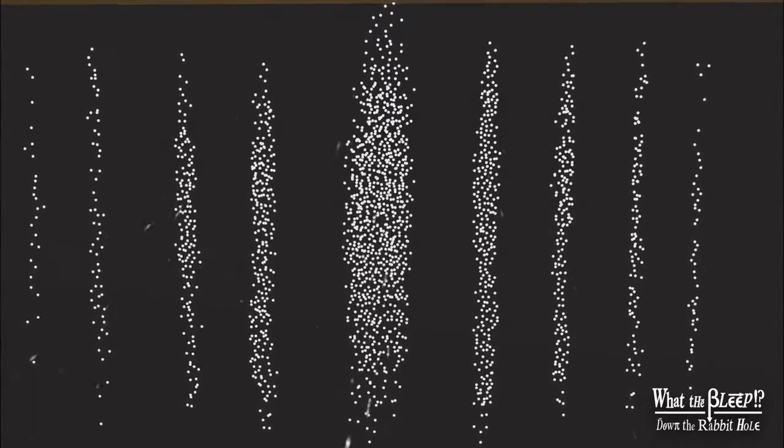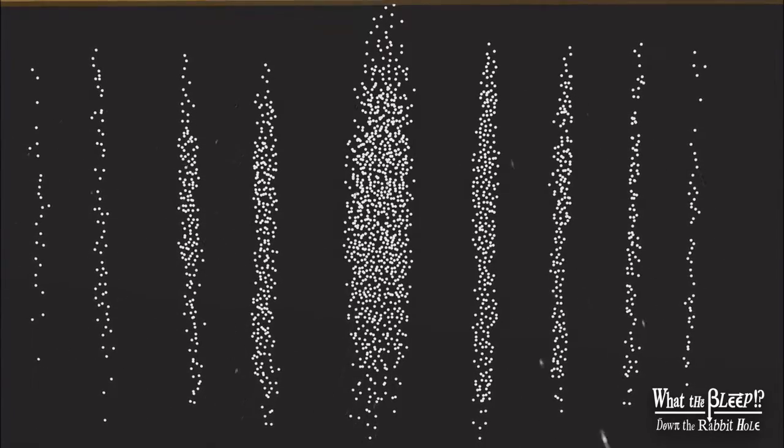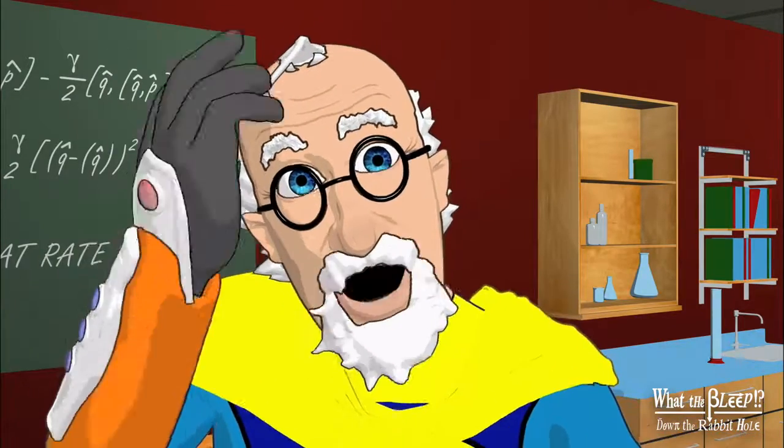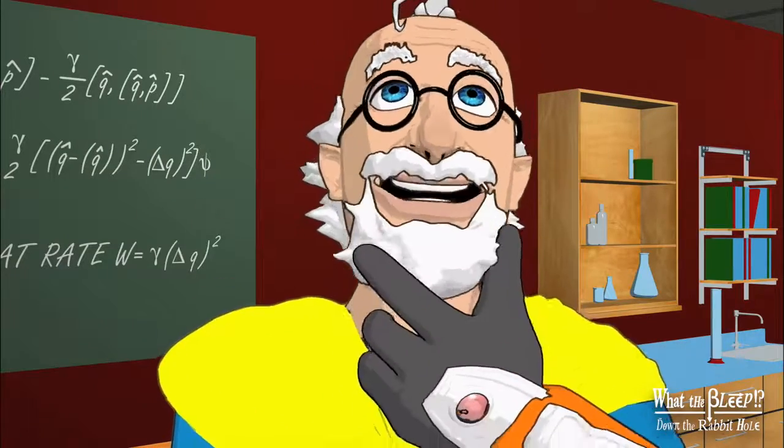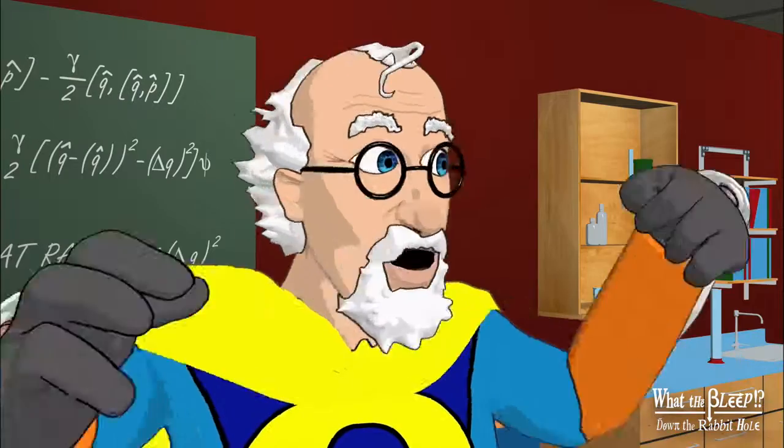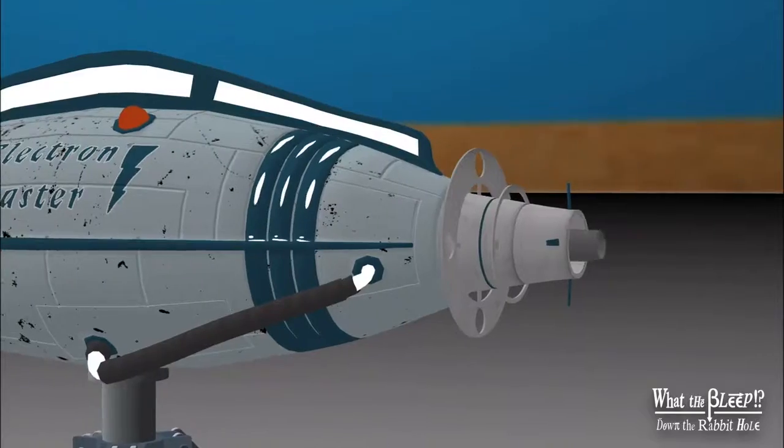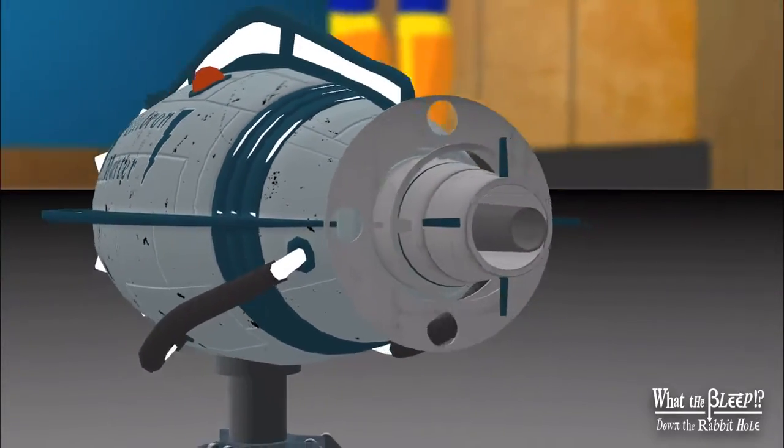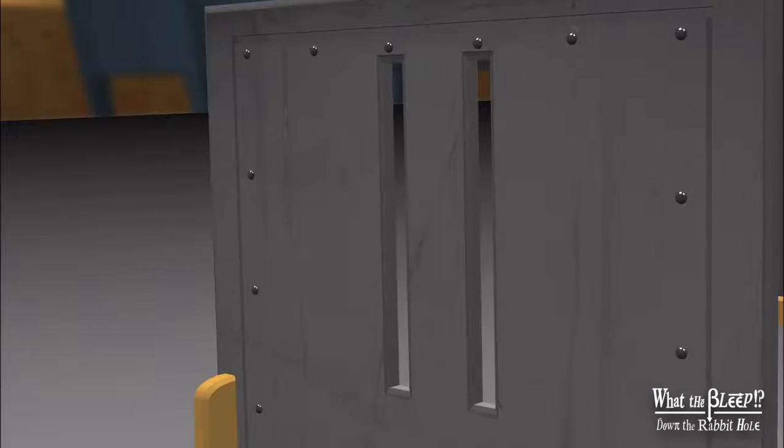But physicists are clever. They thought maybe those little balls are bouncing off each other and creating that pattern, so they decide to shoot electrons through one at a time. There is no way they could interfere with each other.